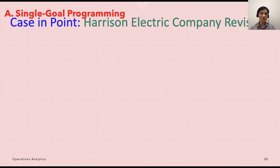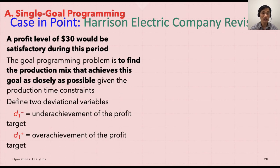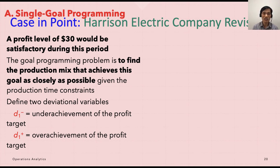Let's take an example of single goal programming: the Harrison Electric Company revisited. This is the company we worked on earlier in this lecture. A profit level of $30 would be satisfactory during this period of the company's operation. Rather than maximizing their profit, they are saying that if they make $30 or more, they are fine — that's their bottom line and their goal.